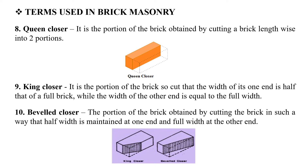The Queen Closer is the portion of a brick obtained by cutting a brick lengthwise into two portions. When we cut the brick, we get two portions. The center of the header portion — cut lengthwise to the full height of the brick — gives us the Queen Closer.